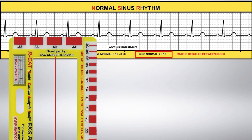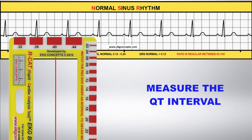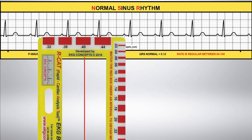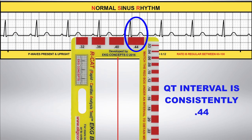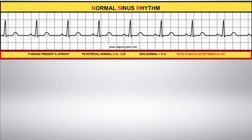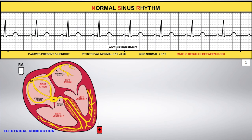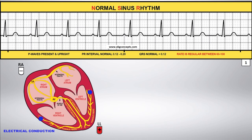Turn the badge sideways and use the calibrated red boxes to measure the QT intervals. The QT interval is consistently 0.44, which is less than half of the R to R interval. These measurements confirm the interpretation of normal sinus rhythm.